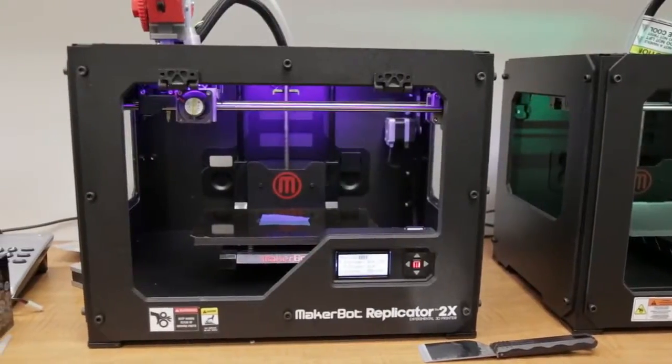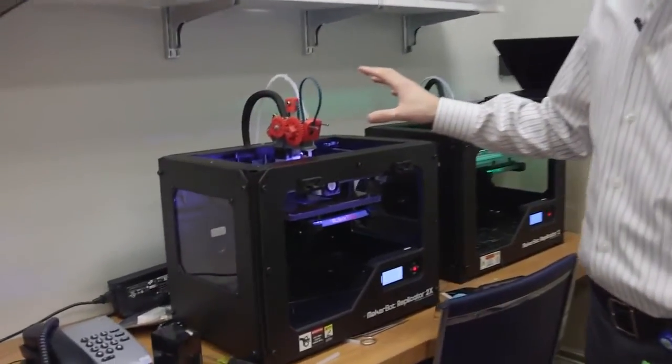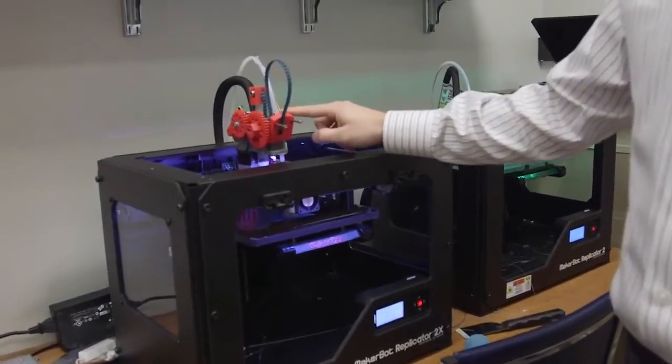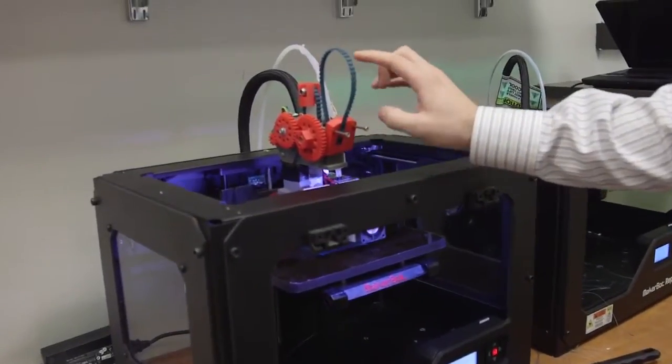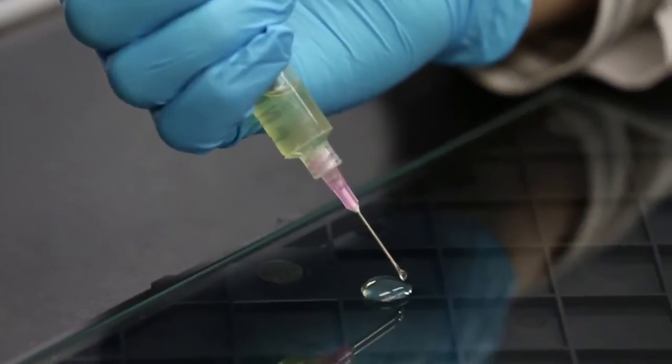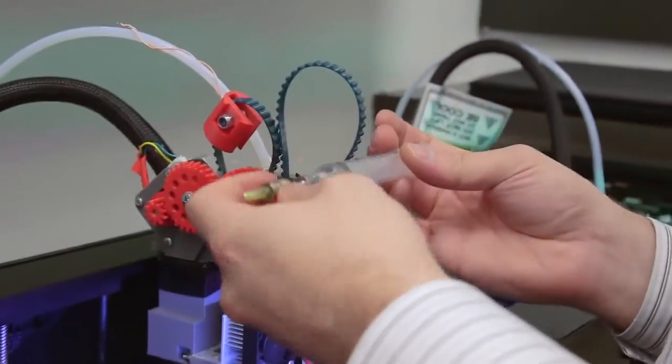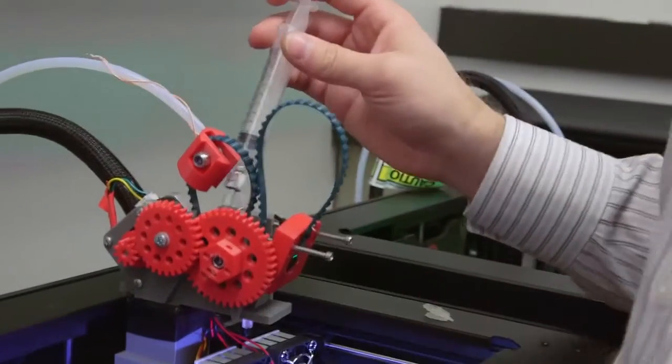This is the MakerBot's replicator 2X, and we've modified all the extruder heads to be able to accept PLA and also to be able to accept a syringe filled up with living cells and what we call bioink. So in the bioink is collagen, food for the cells, and all this type of media, and our chondrocytes, which are the cartilage-making cells.